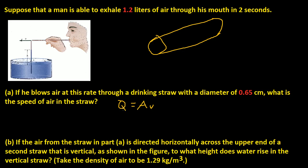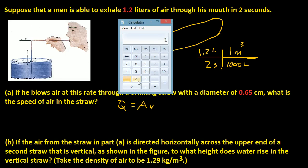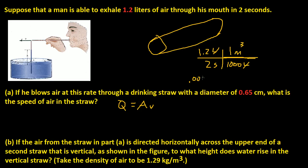Welcome back. Here's the solution. The flow rate is 1.2 liters per 2 seconds. We'd rather have it in meters cubed per second. It turns out that 1,000 liters equals 1 meter cubed. So we calculate 1.2 divided by 2 divided by 1,000, and the liters cancel out, leaving us with 0.0006 meters cubed per second as our flow rate.